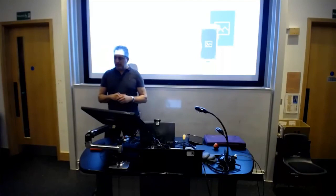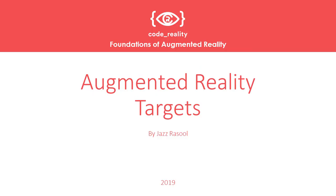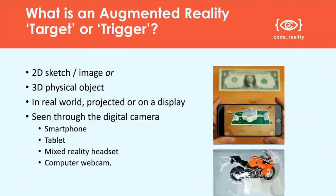The focus of this presentation is about looking at things that can be used for augmented reality experiences. At the very beginning you need something that's going to trigger an augmented reality experience, and what I'm going to focus on is how these kinds of triggers or targets can be selected, produced, and implemented. That's the core subject for today — what actually is an augmented reality target or trigger.